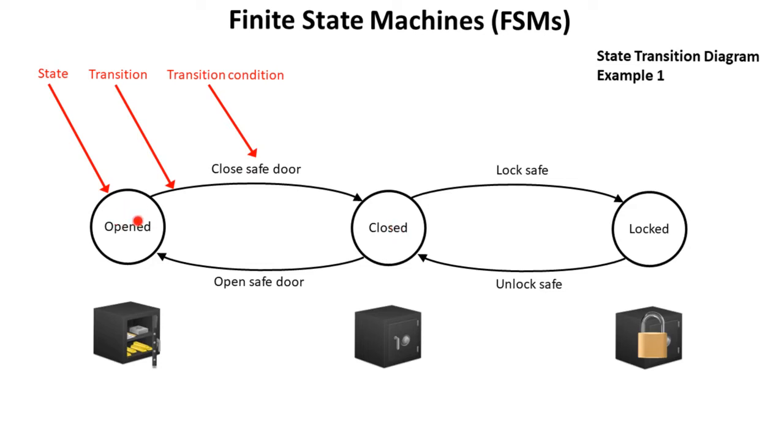When the state is open, the condition closed safe door triggers the transition to the state closed. The condition lock safe moves us from the state closed following the transition to the state locked and vice versa from the other direction.